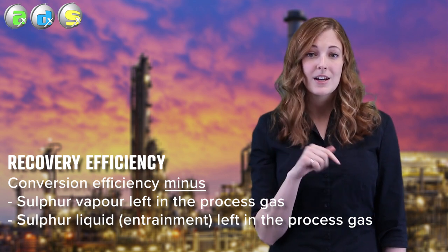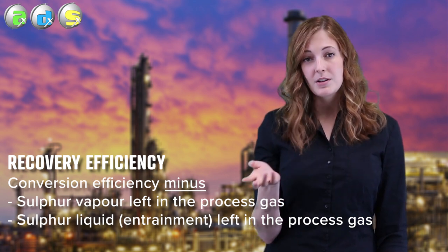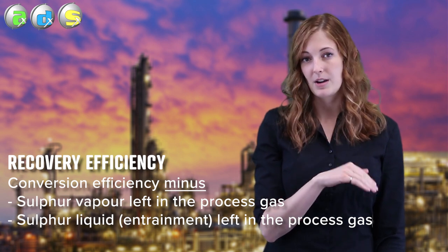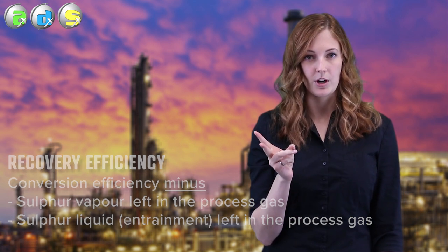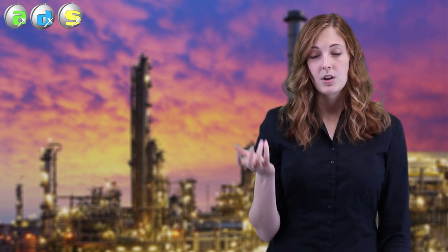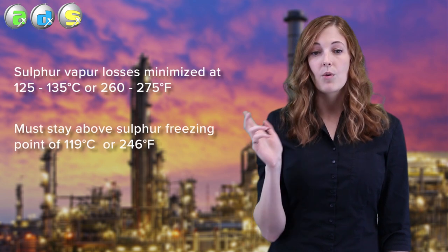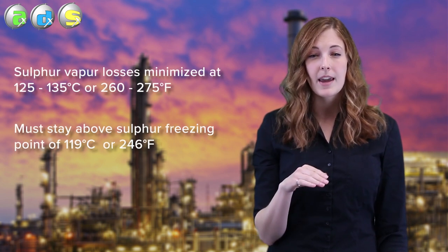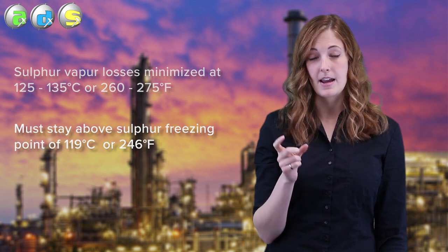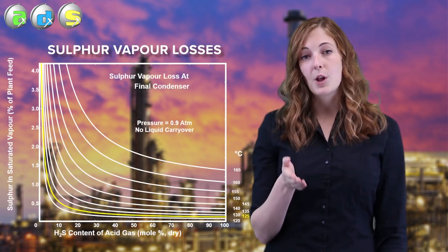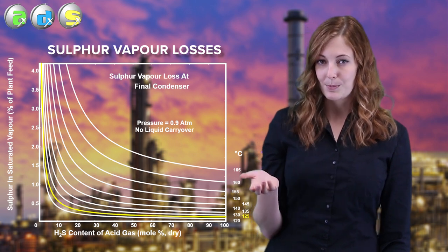If that goes into a stack, it directly affects your recovery efficiency, which you don't want. So again, your recovery is your conversion minus the losses from your sulfur vapor and sulfur liquid entrainment. To minimize those two terms, it has to do with the operation of your final condenser. You want to make sure it's operating at 130 degrees Celsius or 260 degrees Fahrenheit — that's as cold as you can get without risking solidifying the elemental sulfur.